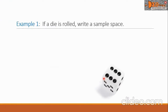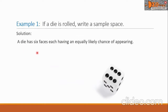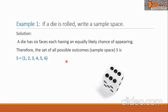Let us have more examples. Example one: if a die is rolled, write the sample space. A die has six faces, each having an equally likely chance of appearing. Therefore, the set of all possible outcomes or sample space, denoted by S, is: S equals {1, 2, 3, 4, 5, 6}. This is our final answer.